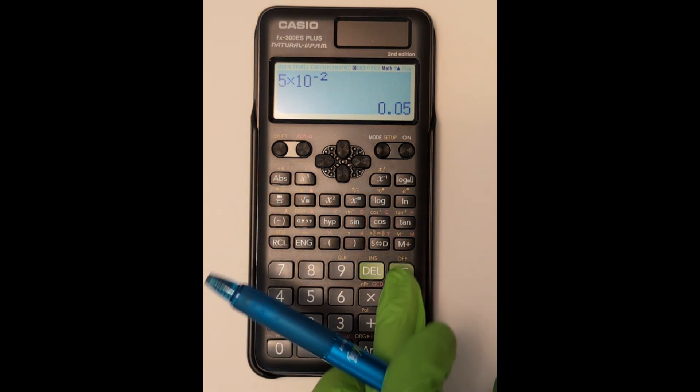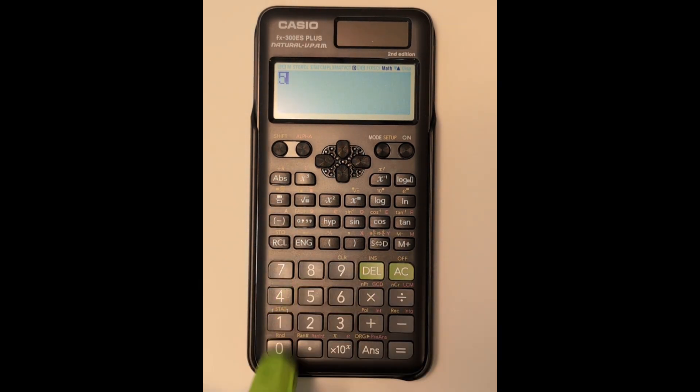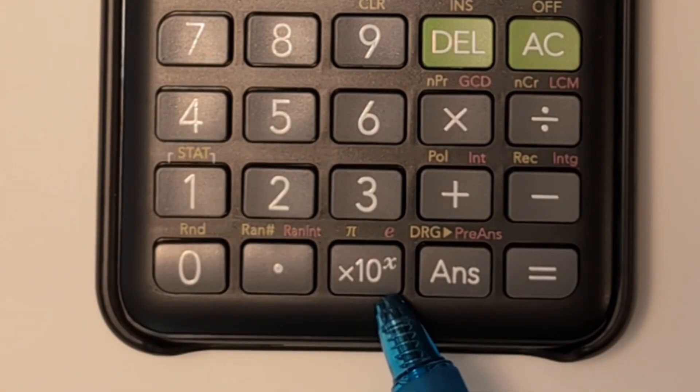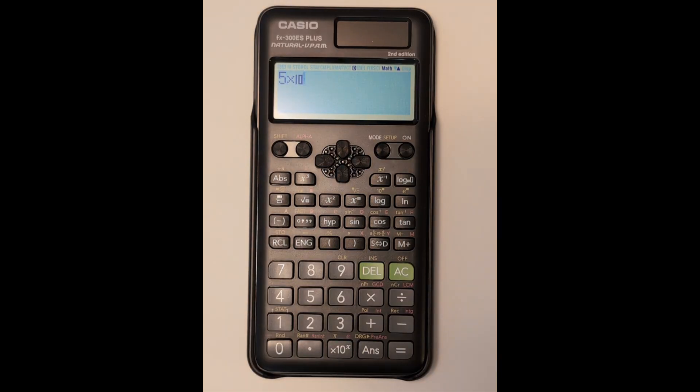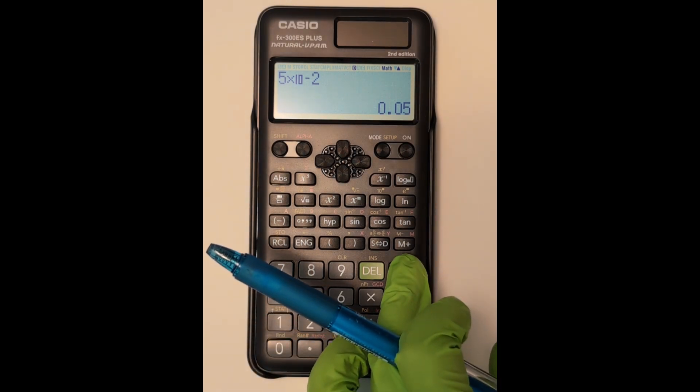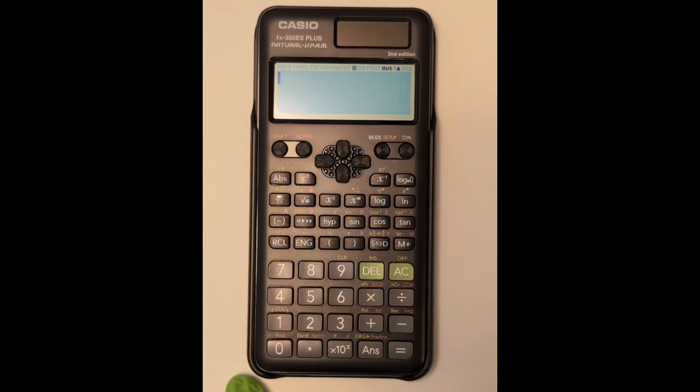Another way to get scientific notation is to use the times 10 button in the bottom row of the calculator. With this button, all you have to do is enter the exponent. In this case, I enter 5, the times 10 button, then the negative 2. If I hit equal, it again shows me the value as a fraction, and I hit the SD button to switch it to standard notation decimal value.